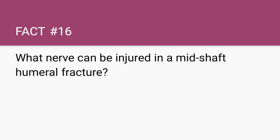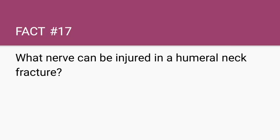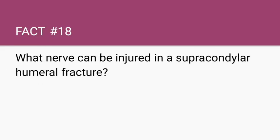What nerve can be injured in a mid-shaft humeral fracture? The radial nerve. What nerve can be injured in a humeral neck fracture? The axillary nerve. What nerve can be injured in a supracondylar humeral fracture? The median nerve. Remember fractures of the humerus can affect three main nerves that spell ARM: humeral neck fracture — axillary nerve; mid-shaft fracture — radial nerve; supracondylar fracture — median nerve. These are extremely high yield.